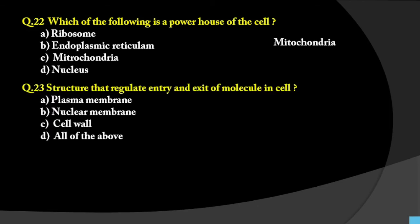Question number 23: Structure that regulates entry and exit of molecules in the cell. Options are plasma membrane, nuclear membrane, cell wall, or all of the above. The plasma membrane regulates entry and exit. From the plasma membrane structure, proteins present in it act as receptors and transport molecules from outside to inside through the plasma membrane. So the answer is plasma membrane.